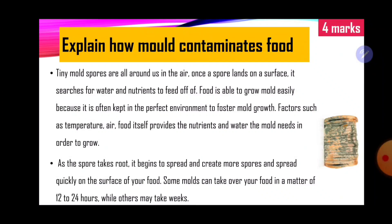Next question: explain how mold contaminates food. This is valued at four marks. Tiny mold spores are all around us in the air. Once a spore lands on a surface, it searches for water and nutrients to feed off. Food is able to grow mold easily because it is often kept in the perfect environment to foster mold growth. Factors such as temperature, air, and food itself provide the nutrients and water the mold needs in order to grow. As the spore takes root, it begins to spread and create more spores, spreading quickly on surfaces of food. Some molds can take over your food in a matter of 12 to 24 hours, while others may take weeks.